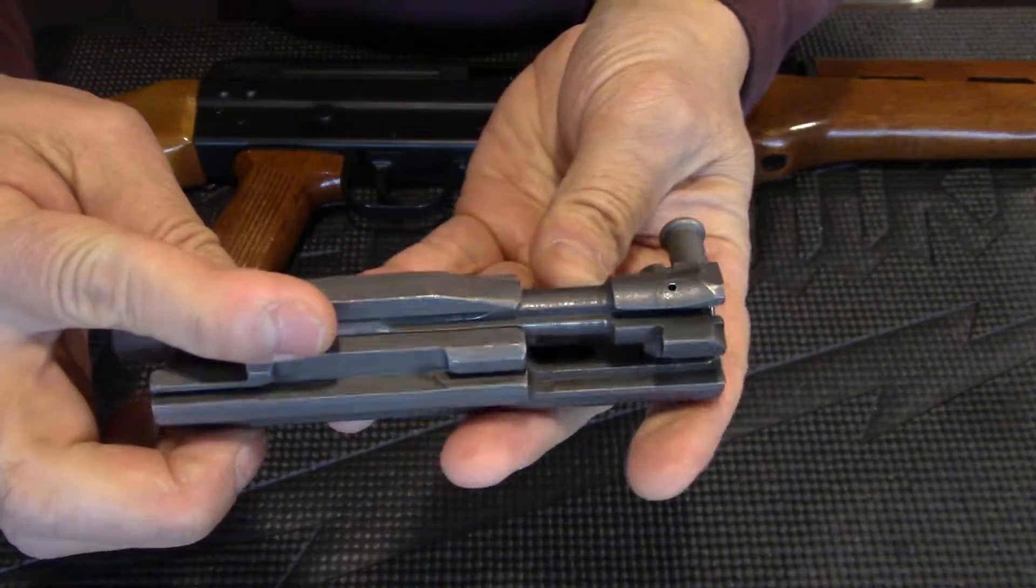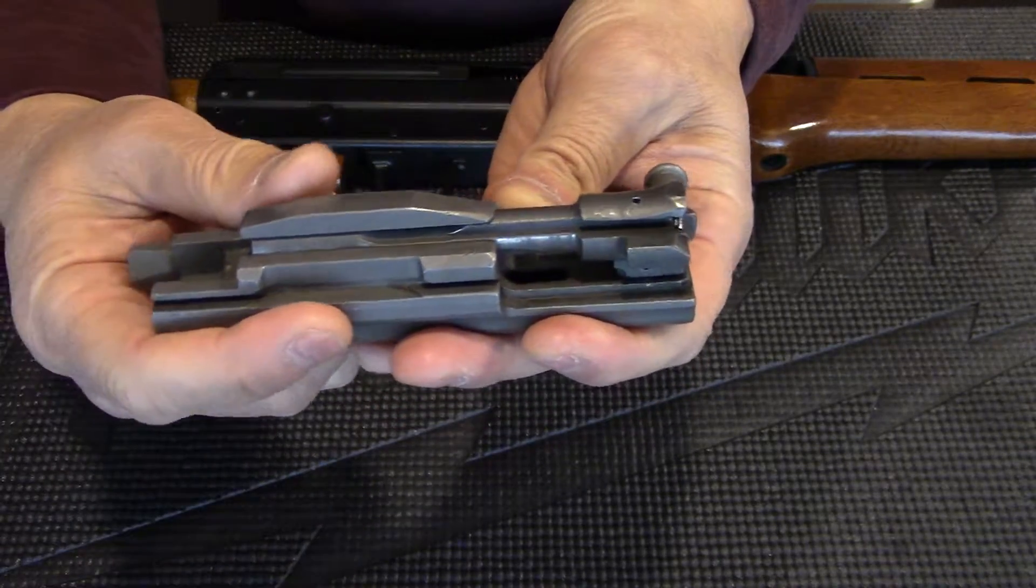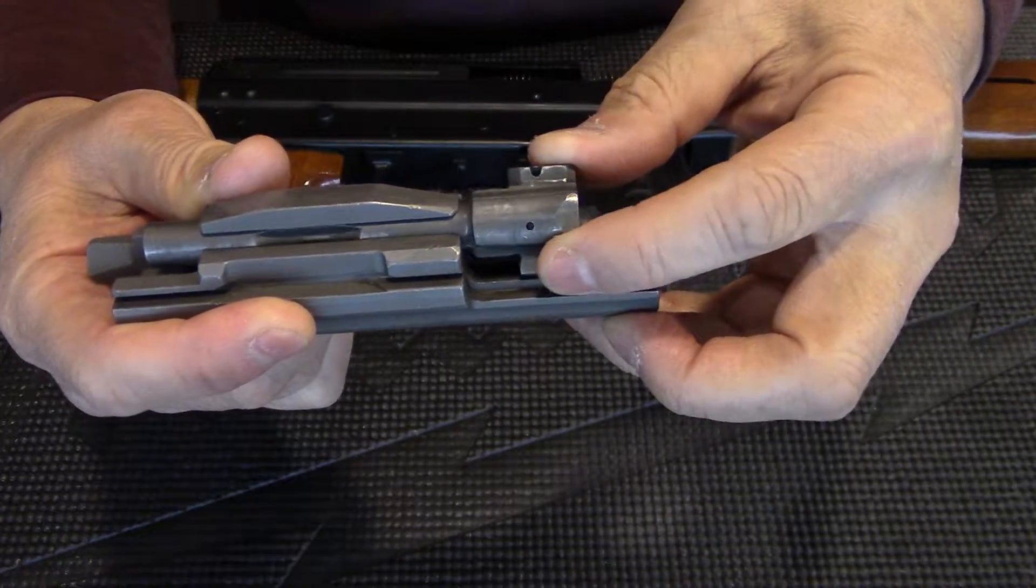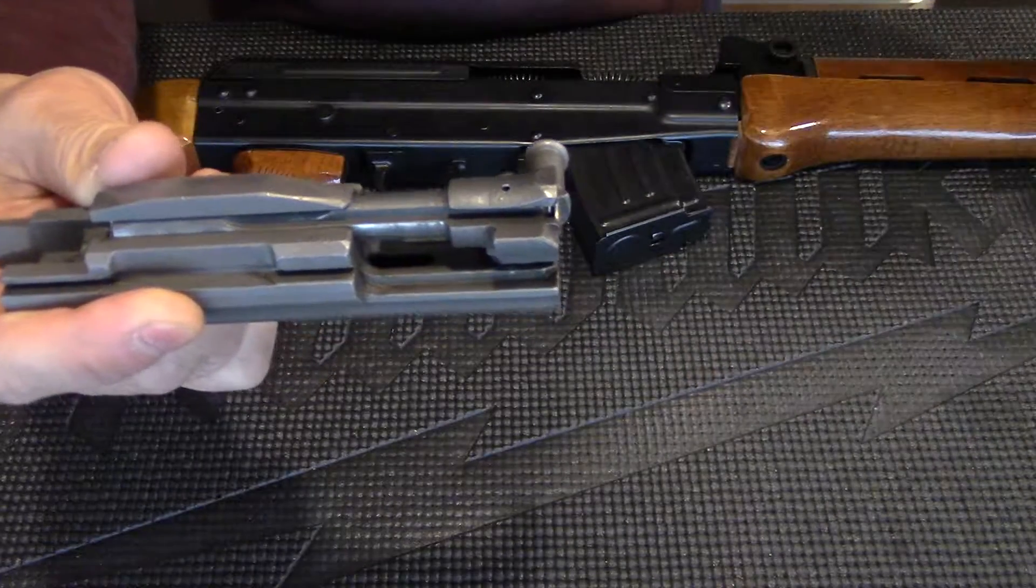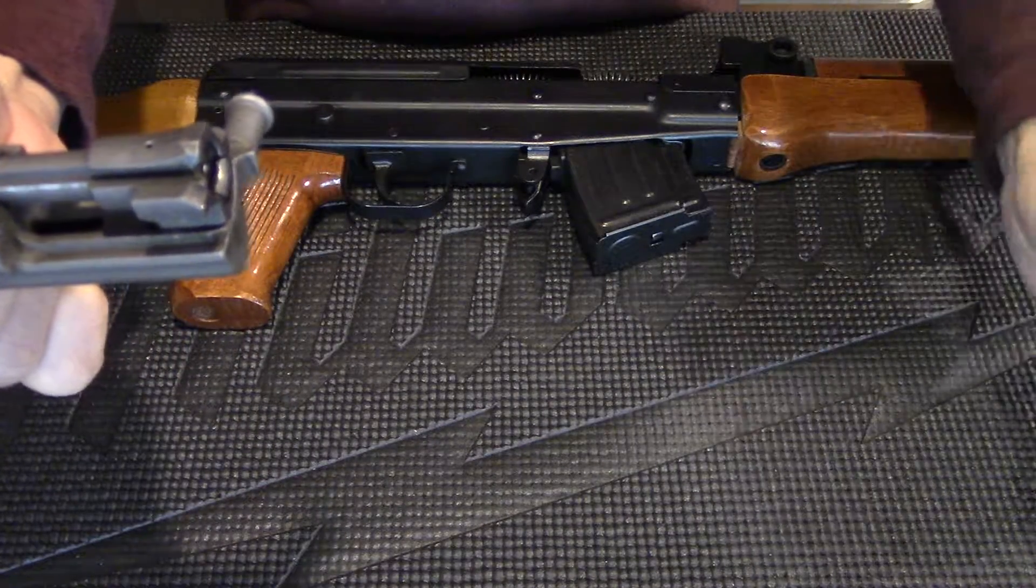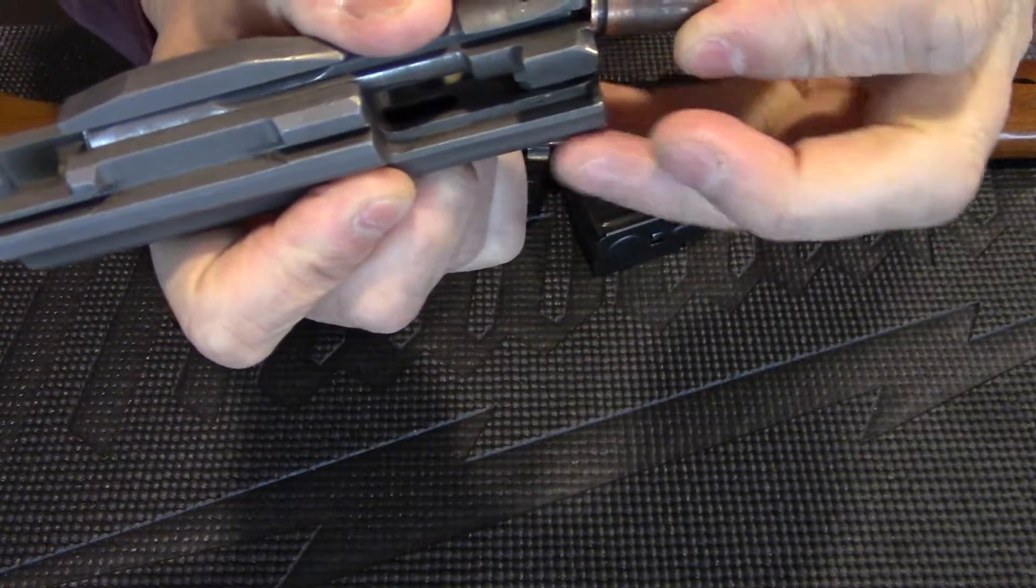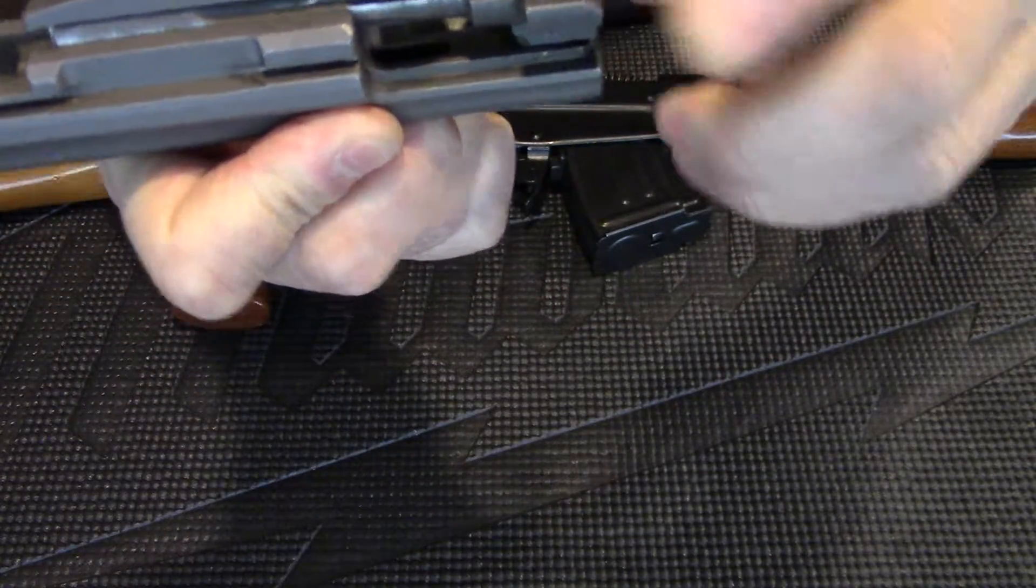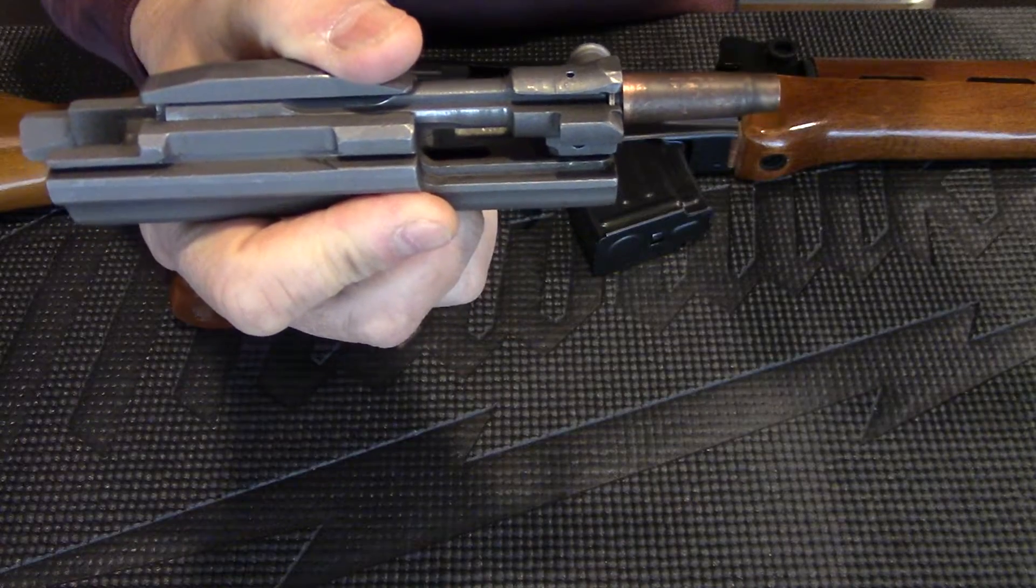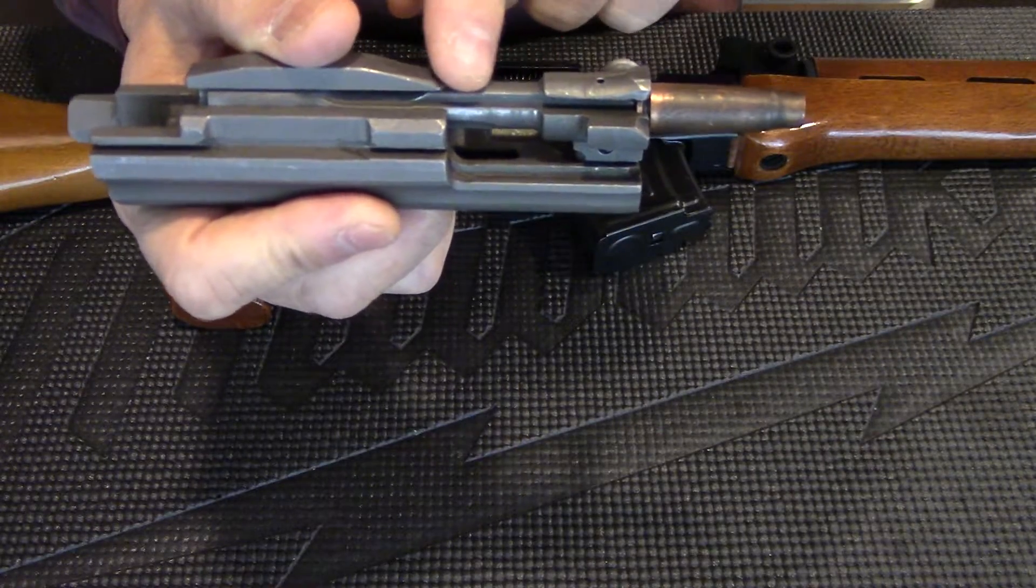If I turn the carrier and the bolt upside down, you can see that the Type 81 uses a rotating locking mechanism. I'll go through the whole cycle with you. This is in its open position. When it goes forward, it grabs a round and pushes it forward out of the magazine and into the chamber.